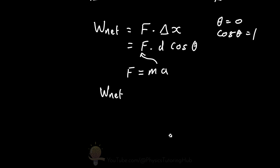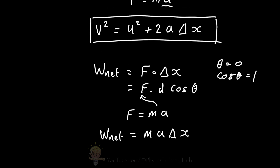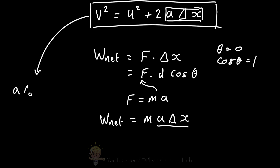So the net work done equals the object's mass times its constant acceleration multiplied by the distance traveled, delta x. Looking at our kinematics formula, the work formula shares the acceleration and distance terms in common. Rearranging the kinematics formula, we get: acceleration times distance equals the final velocity squared minus the initial velocity squared, divided by two.